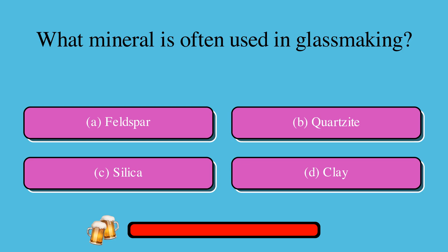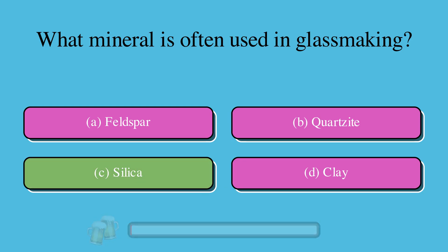What mineral is often used in glassmaking? A. Feldspar, or B. Quartzite, or C. Silica, or D. Clay? The correct answer is C. Silica.